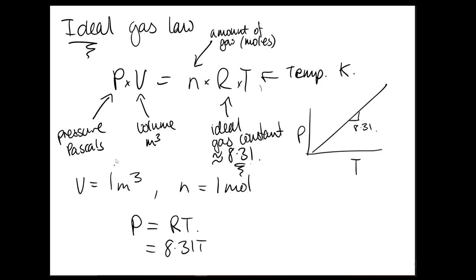So this is 8.31 times temperature is equal to pressure. If the temperature increases by 1 degree Kelvin, the pressure will increase by 8.31 pascals. That's why we have a linear relationship, right? So which means that if your temperature goes from 20 to 21 degrees Kelvin, then your pressure will go from 20 times 8.31 to 21 times 8.31, which is an increase of 8.31.